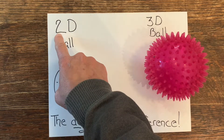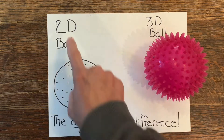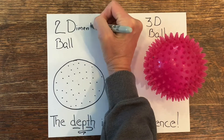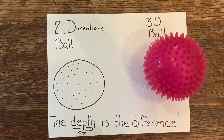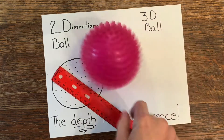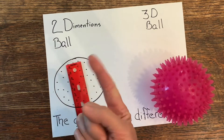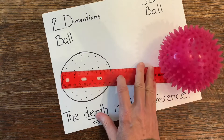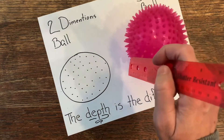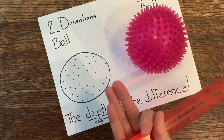How do you know the difference between 2D and 3D, and what does the D stand for? Well, the D stands for dimensions. What are dimensions? Dimensions are measurements. So if I have this 2D ball, I can measure how tall it is — that's one dimension — and I can measure how wide it is — that's two dimensions. But can I measure how deep it is?